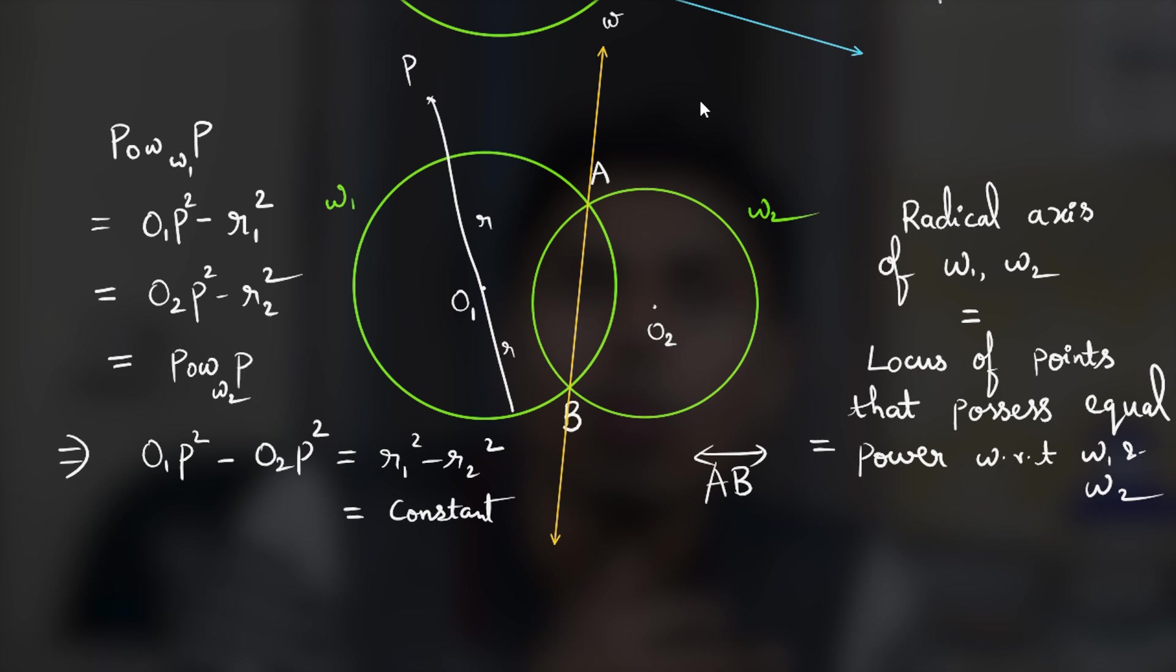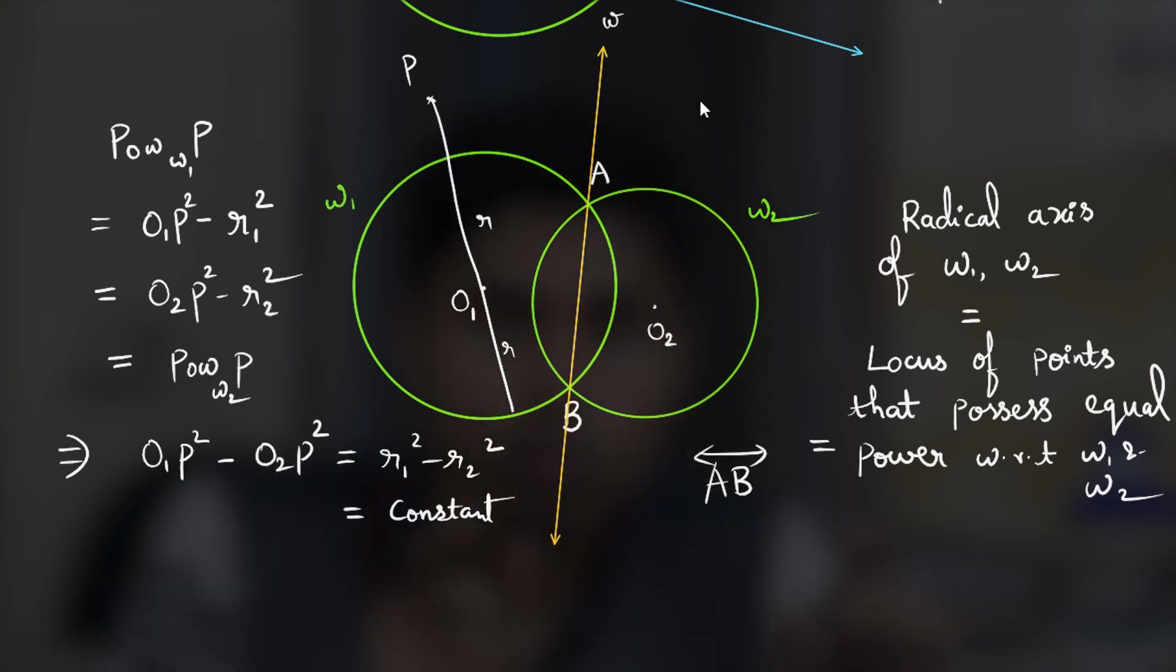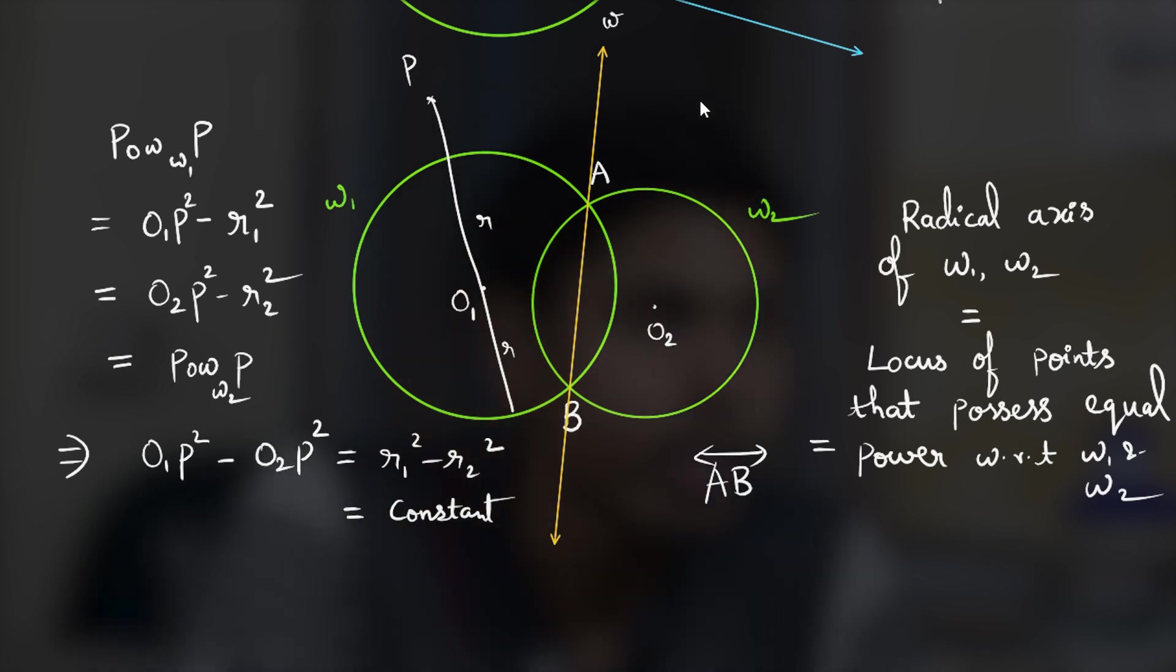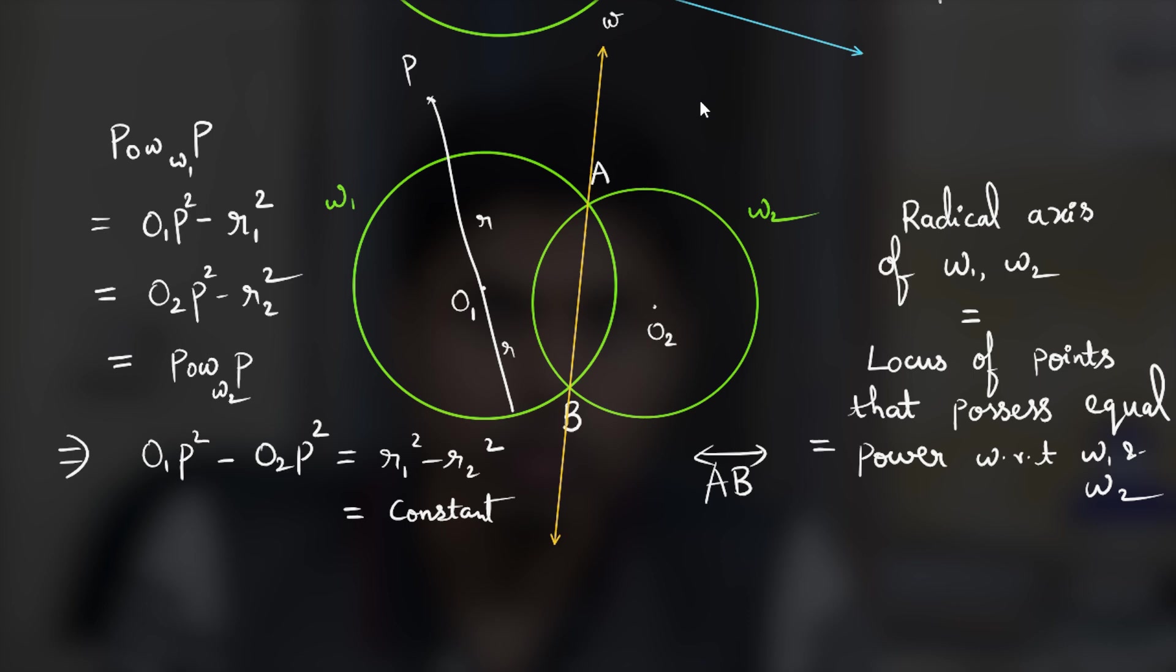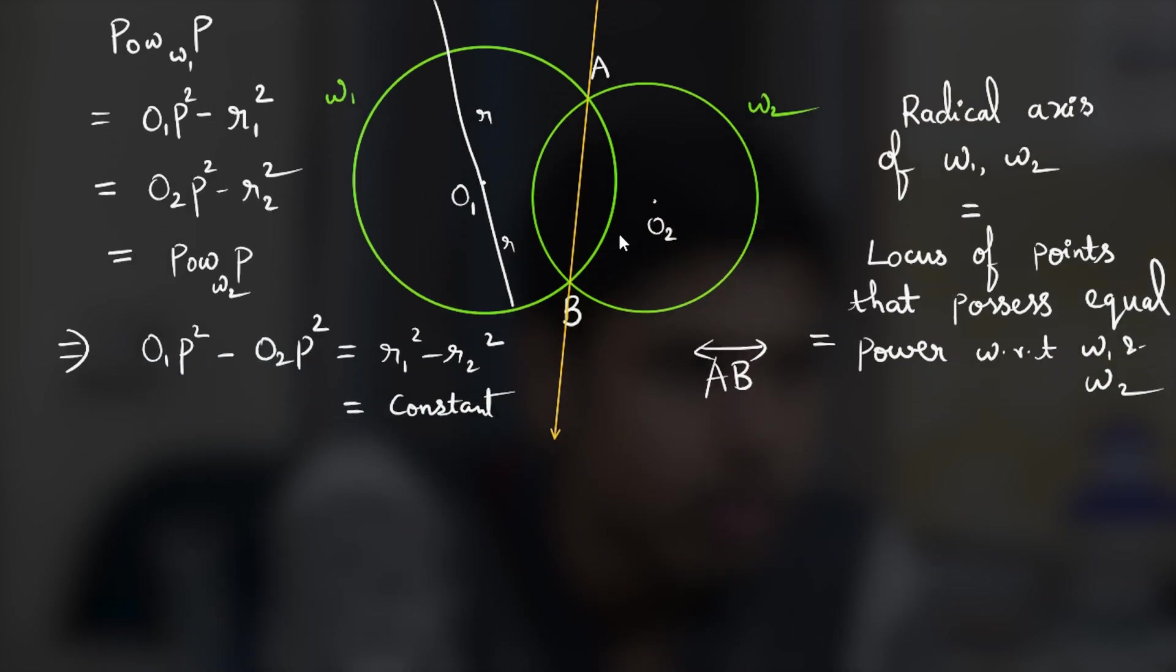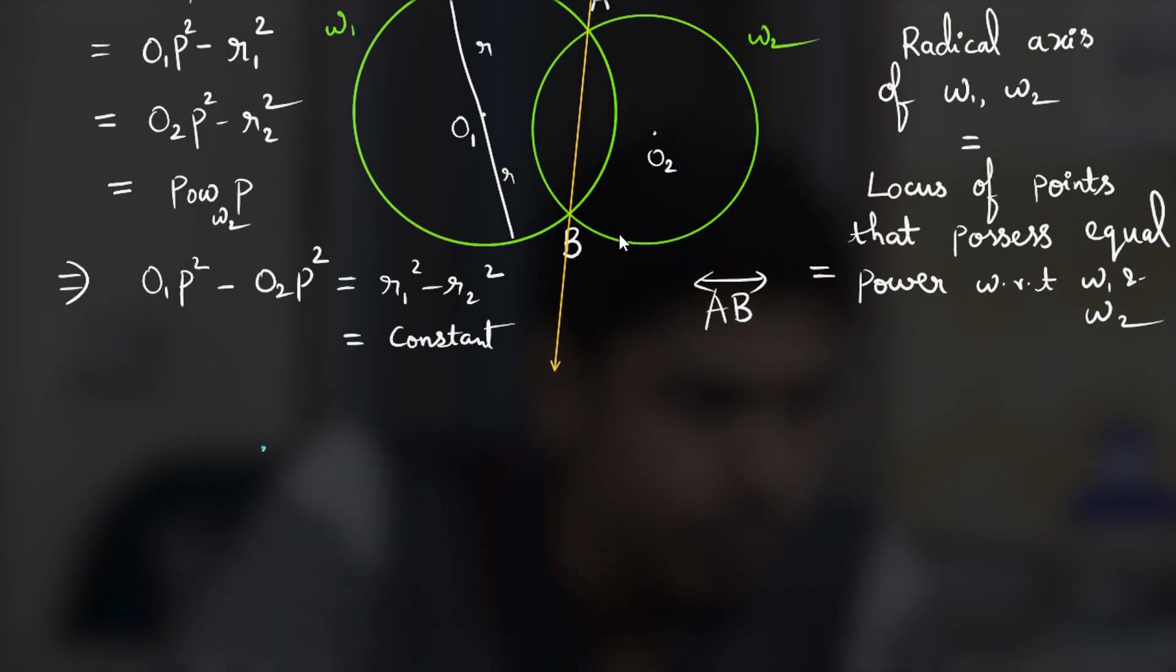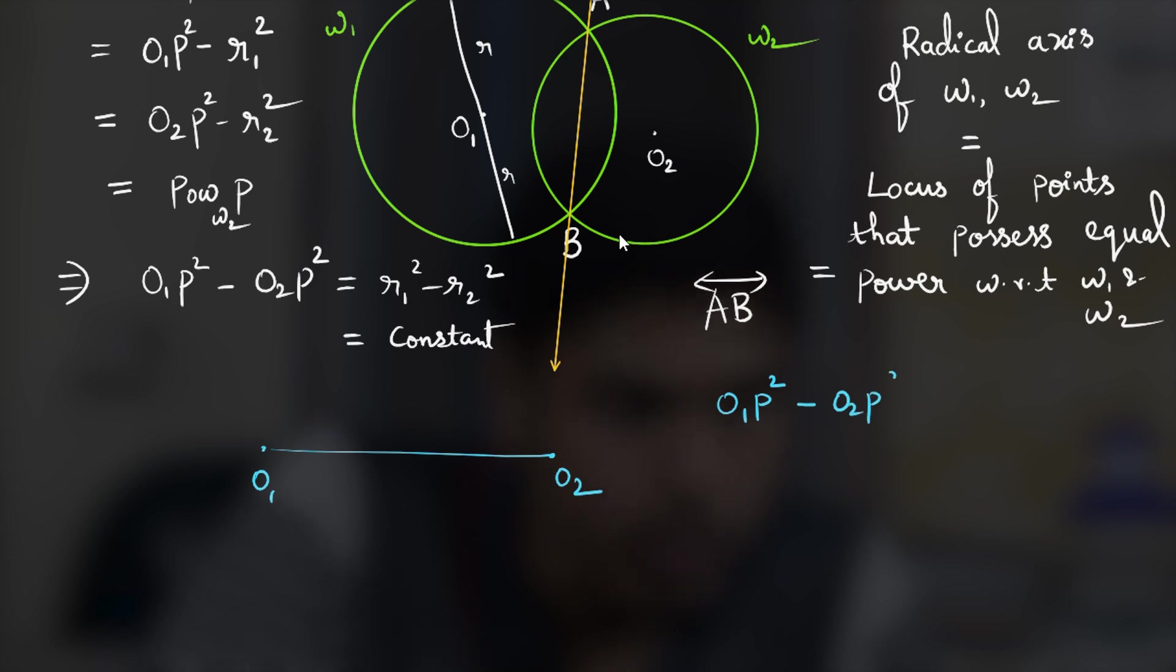O1 is a constant, O2 is a constant and when will difference of squares be a constant? When it lies on a particular perpendicular line joining those two given points. So it will look like this. If you have O1 and O2, the locus of points P such that O1P square minus O2P square is a constant will be a line that is perpendicular to this.